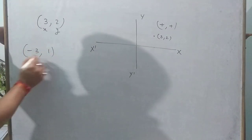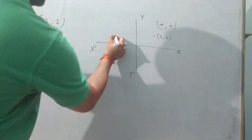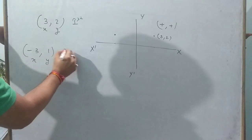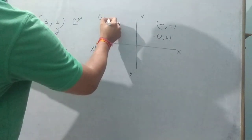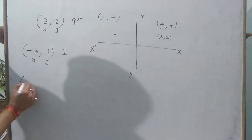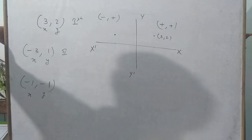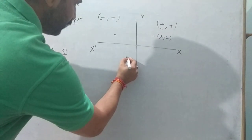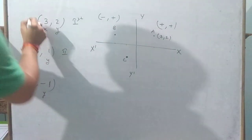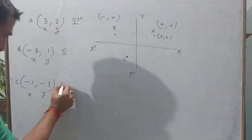For the point (-3, 1), X is negative and Y is positive, so it lies in the second quadrant. Second quadrant means minus-comma-plus. For the point (-1, -1), both X and Y are negative. Let us call this point C. It lies in the third quadrant since both X and Y are negative.